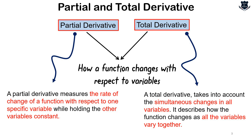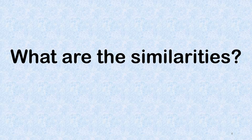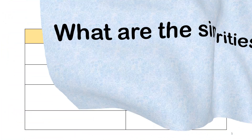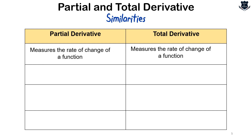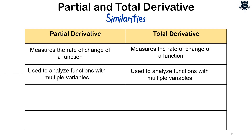Now, can we go a little deeper and understand the real reasons? Also, do partial and total derivatives carry any similarities? Let us look at that first and then go into the differences. Both partial and total derivatives measure the rate of change of a function, and both are used to analyze functions with multiple variables — what we call multivariate functions.